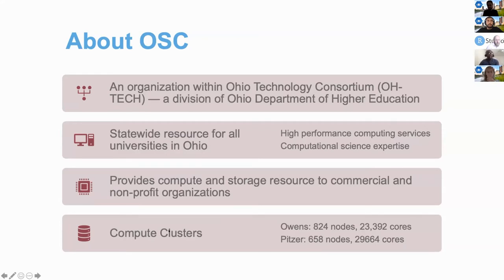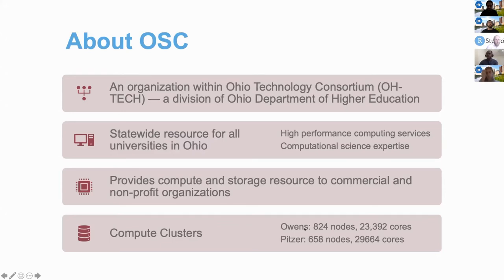The two main types of resources we provide are high performance computing services and computational science expertise, especially through training events at OSC. The two main compute clusters that most people use are one called Owens and another called Pitzer. The Owens cluster has about 824 nodes — you can think of a node as equivalent to a high-end workstation, all connected by high-speed fiber optic network. We have a total of about 23,000 processor cores on Owens and close to 30,000 processor cores on Pitzer, and these are resources you can take advantage of for big data analytics with R.